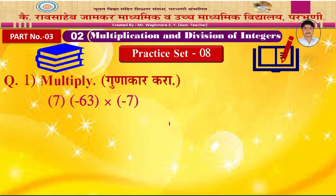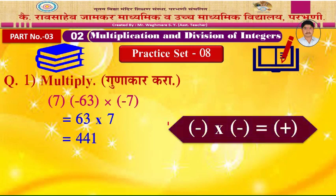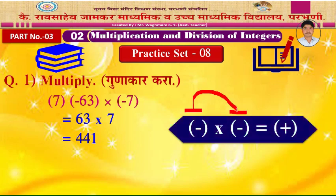Example 7: Minus 63 into minus 7. You may multiply without thinking about the sign — 63 into 7 is 441. Remember the rule: both numbers are negative, so the product is positive. The answer is positive 441.